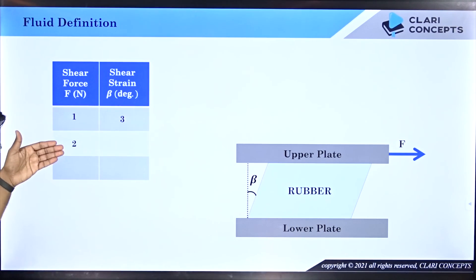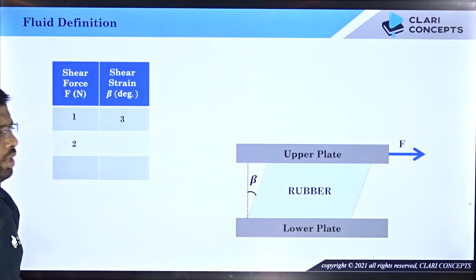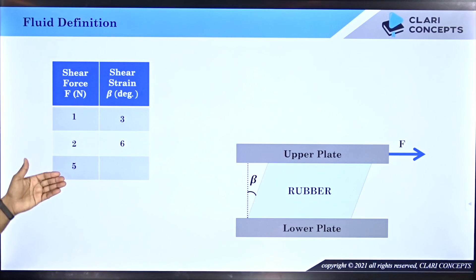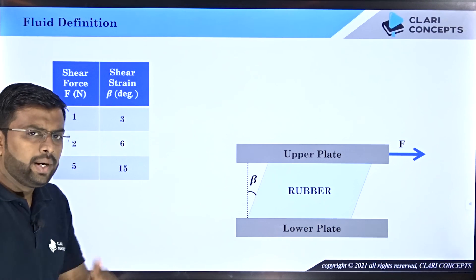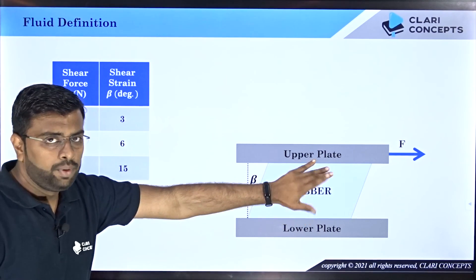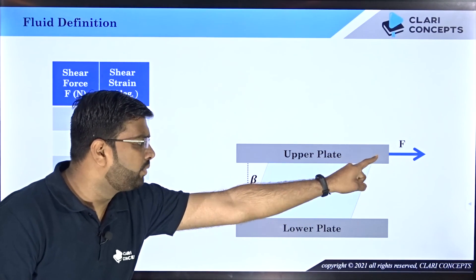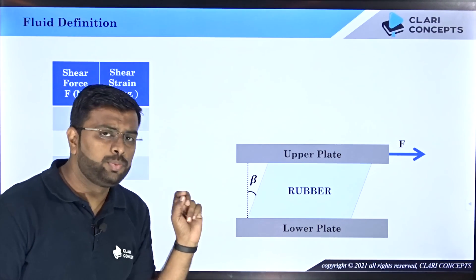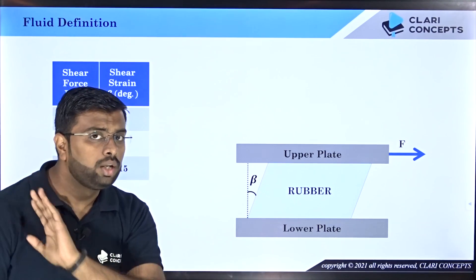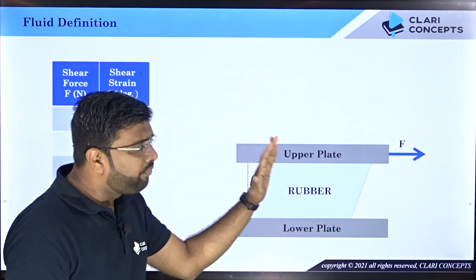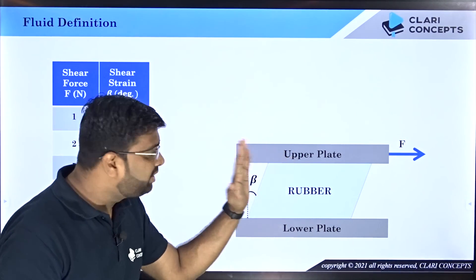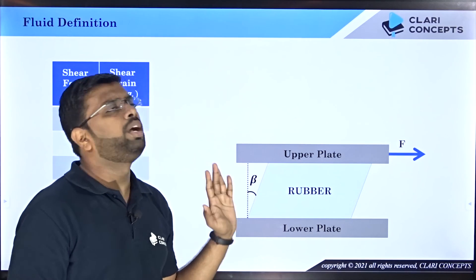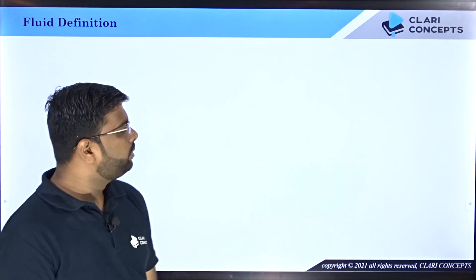If you increase the force, the deformation increases — say six degrees — and on further increase even more. The key point for solid materials is: as long as the shear force is applied, the angular deformation is a particular fixed value. When you release the force, the rubber returns to its original shape, fully or partially. It stays deformed only while the force is being applied.